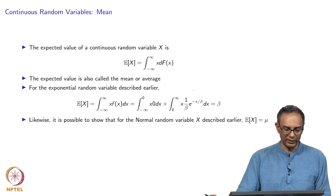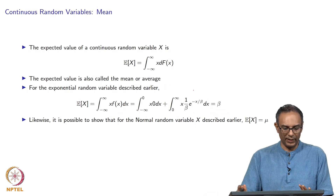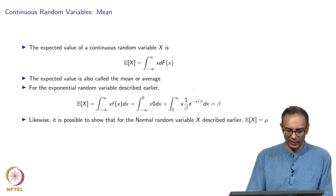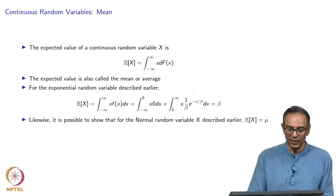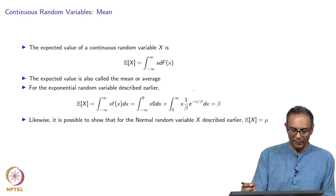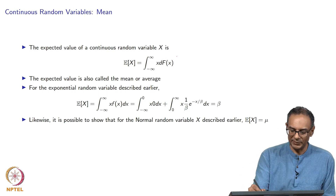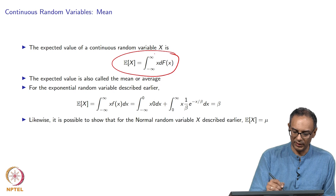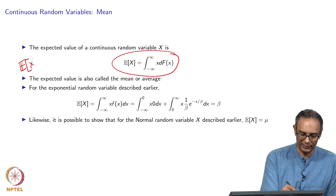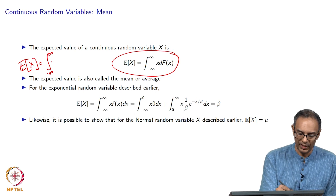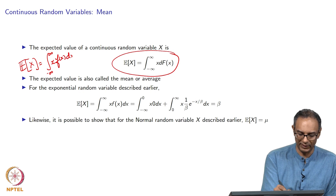We are going to do this by talking about the mean first, and then we will spend the next slide talking about the variance. By definition, the expected value of a continuous random variable is given by this. Sometimes we also write this as the expected value of x, which is the integral from negative infinity to infinity of x times the pdf, little f of x, times dx.